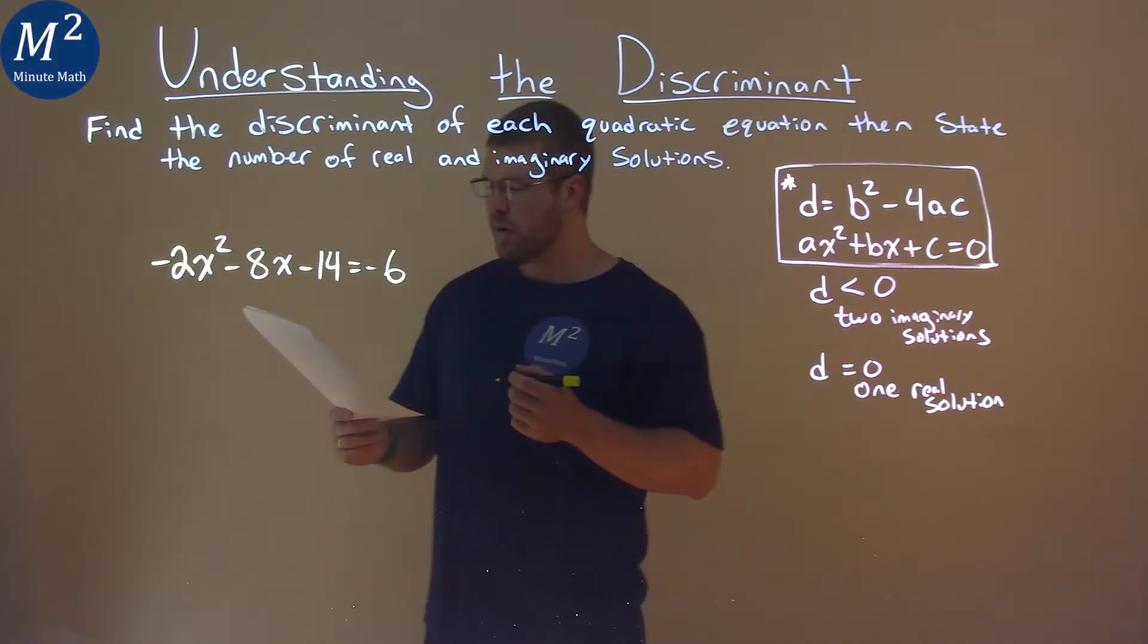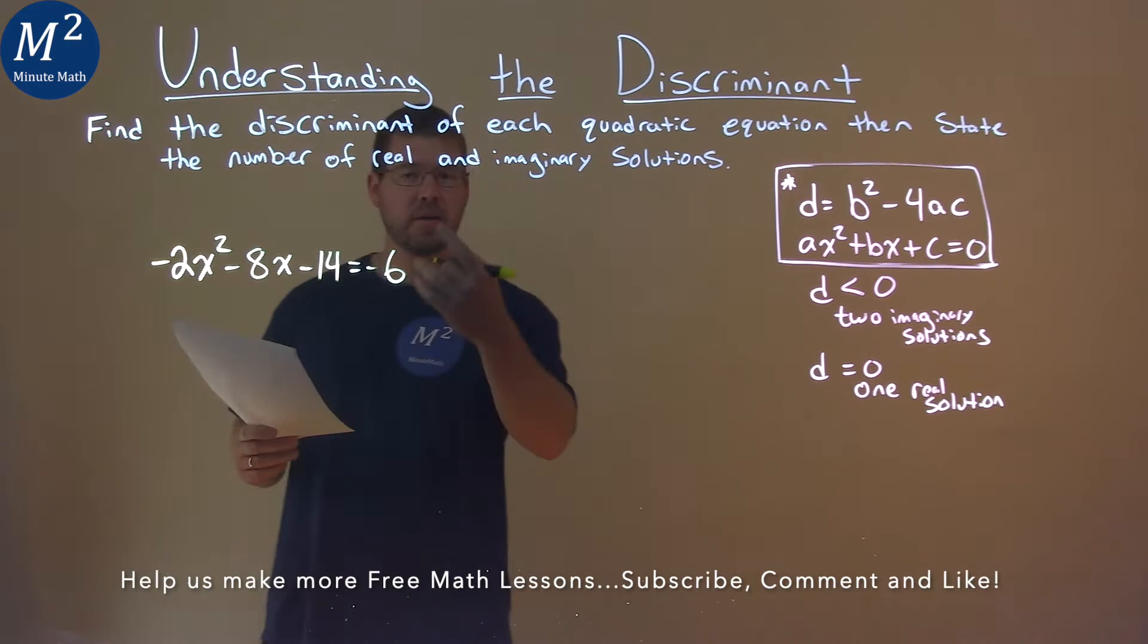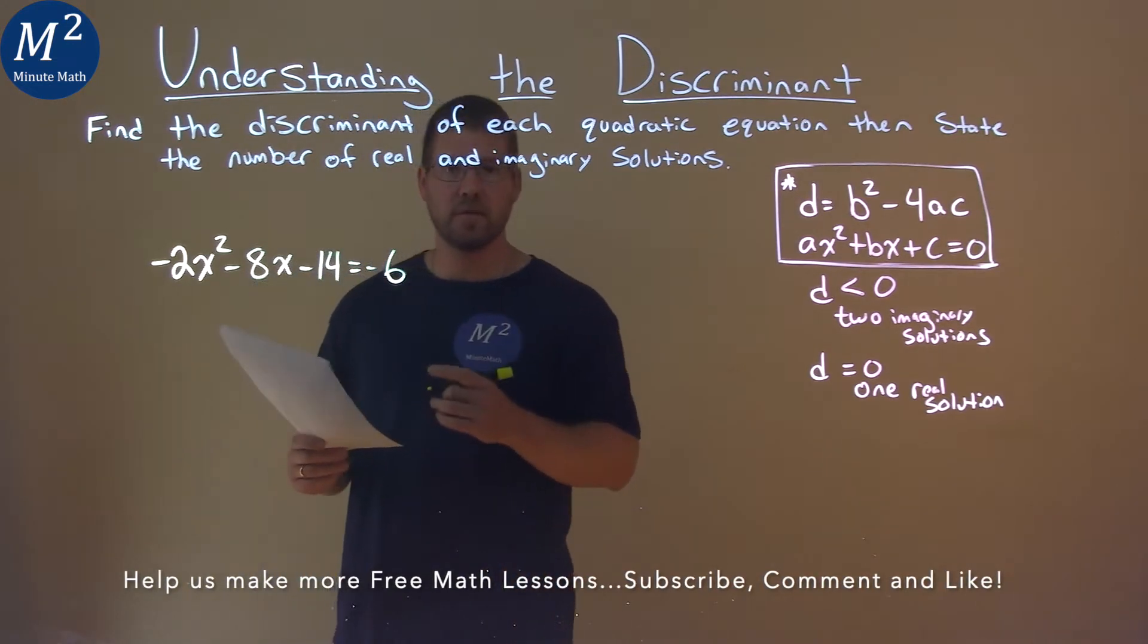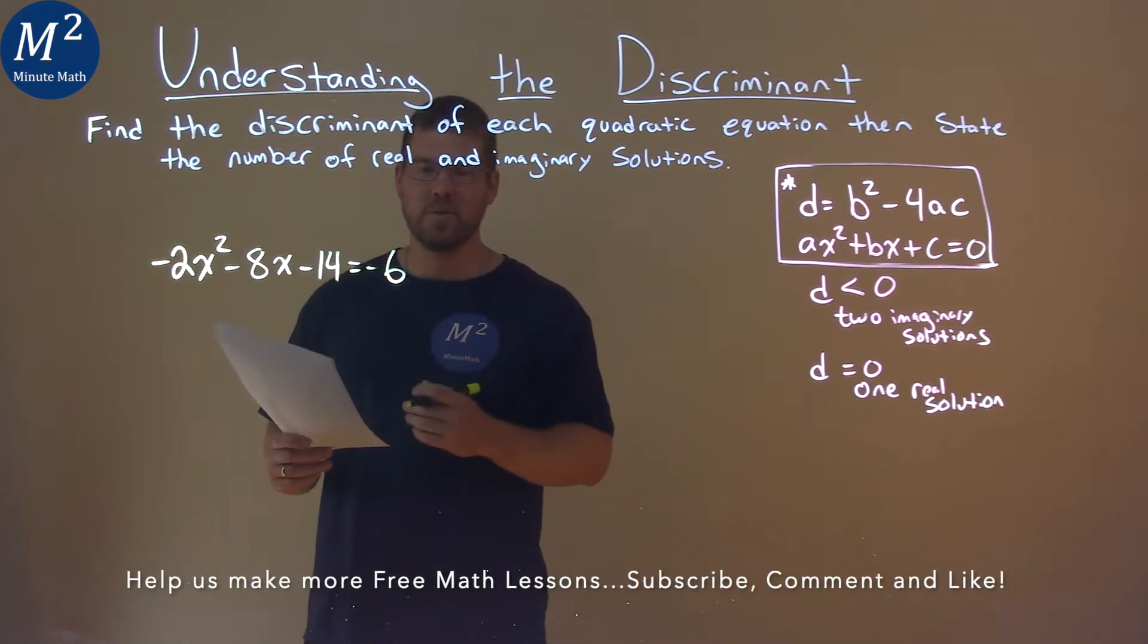We're given this problem right here. Negative 2x squared minus 8x minus 14 equals negative 6 and we need to find the discriminant.